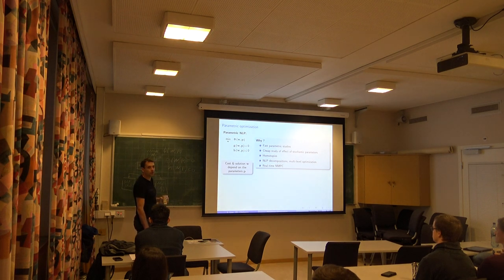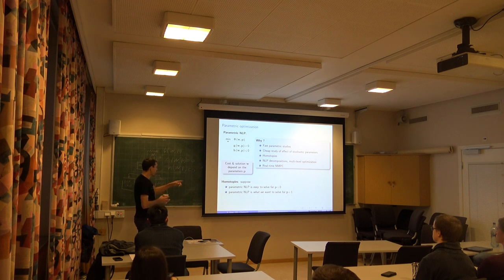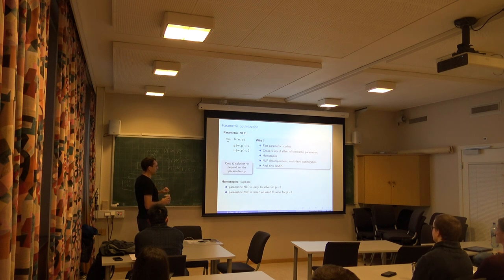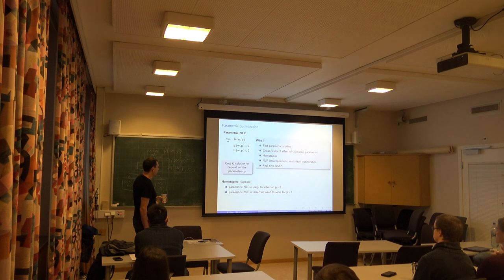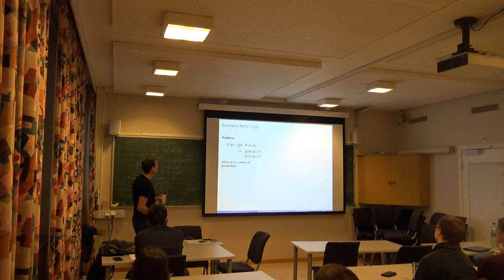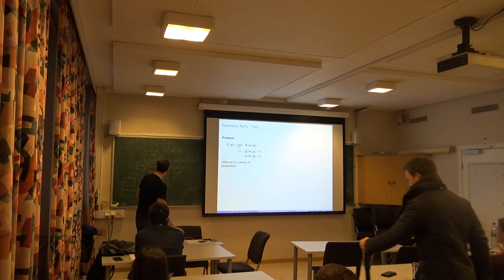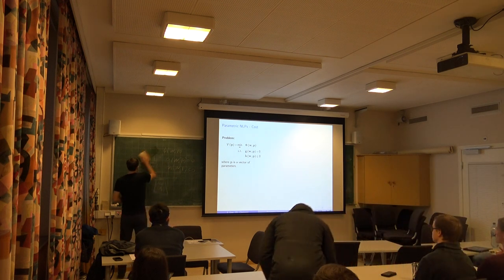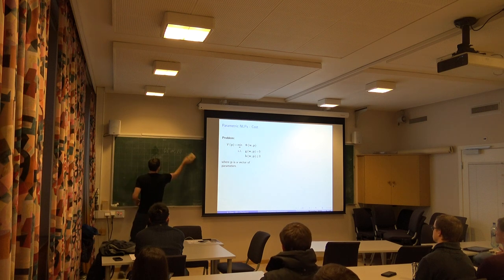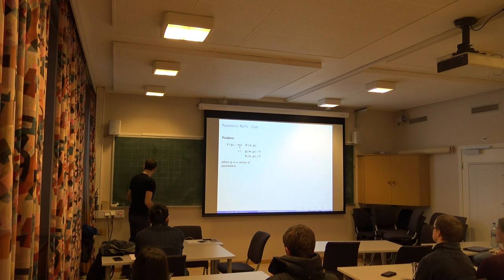Also, when you do real-time NMPC, it's based on these ideas — how you can go for very high speed. So we discussed this already. The first question you can ask — and that's the easy question — is: this is your NLP with a parameter P. If you solve it, you get a solution W and the resulting cost: phi evaluated at the optimal solution W star, for the corresponding P. Let's call it V of P.